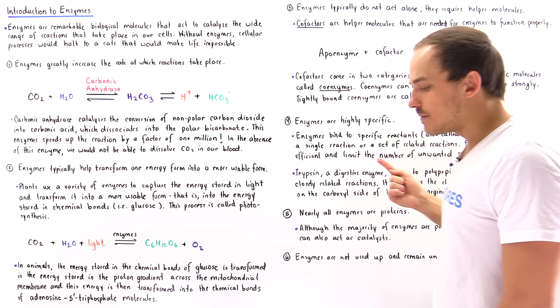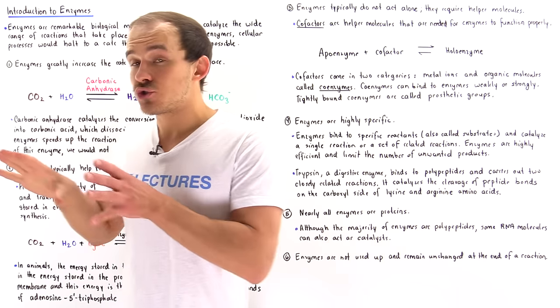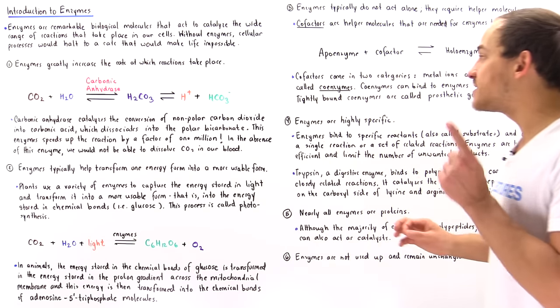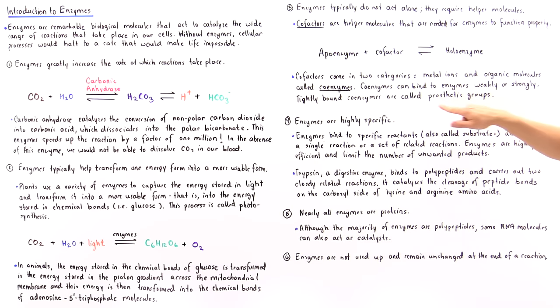Now coenzymes can bind onto proteins either strongly or weakly, and if we have a coenzyme that is bound very tightly to the enzyme that is known as a prosthetic group.